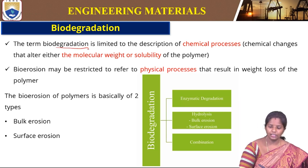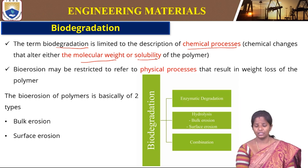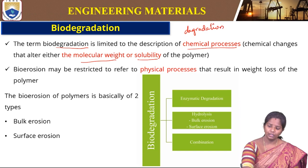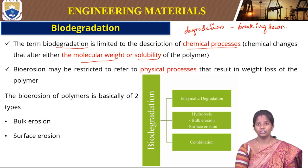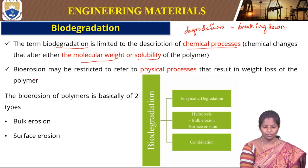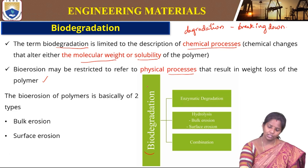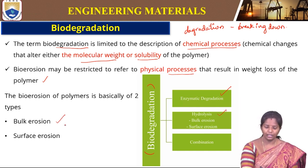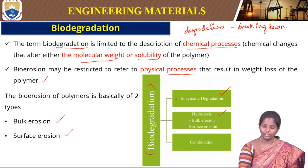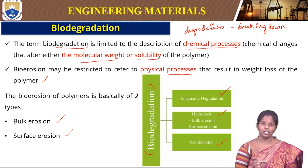Biodegradation is limited to description of chemical processes that alter molecular weight or solubility. Degradation means breaking down the original structure, which affects solubility and ultimately molecular weight. Biodegradation may also involve a physical process resulting in weight loss of the polymer. Biodegradation occurs in three ways: enzymatic biodegradation; hydrolysis, which has two types — bulk erosion and surface erosion; and a combination of both enzymatic and hydrolysis. These are the three different methods of biodegradation by which polymers degrade into the matrix.